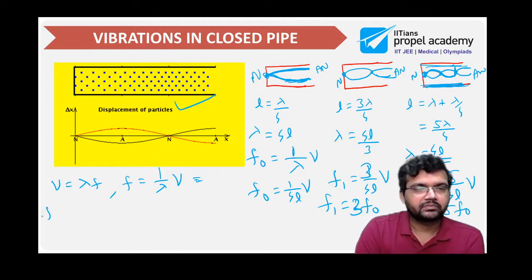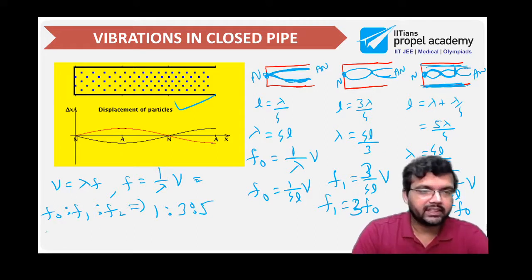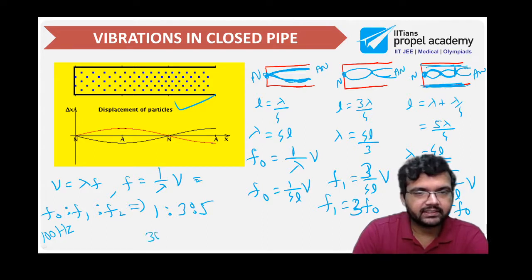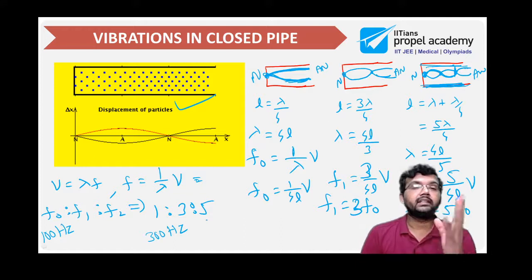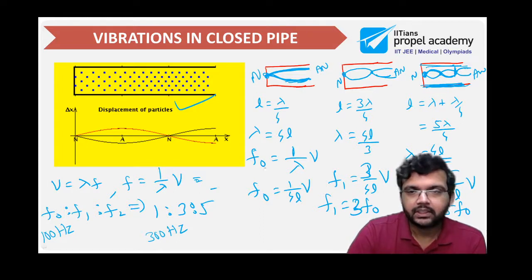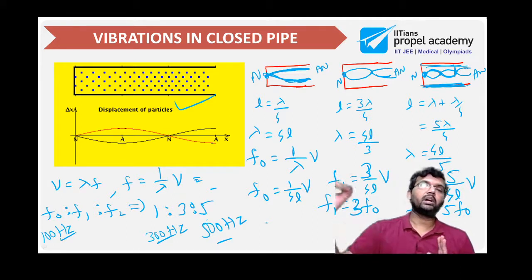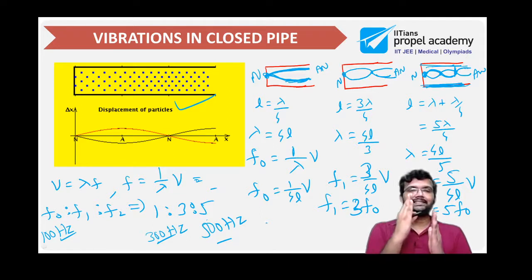So F0, F1, F2 go as 1, 3, 5 times F0. If the first frequency is 100 Hz, the next possibility is 300 Hz. You can't produce 200 Hz here — 150 not possible, 250 not possible, less than 100 not possible. Only selected frequencies will be possible: 100, 300, 500, 700, 900 and so on up to infinity. Like this, selected frequencies — only odd harmonics — you get from a closed pipe. In a flute for example, you will get only selected frequencies.